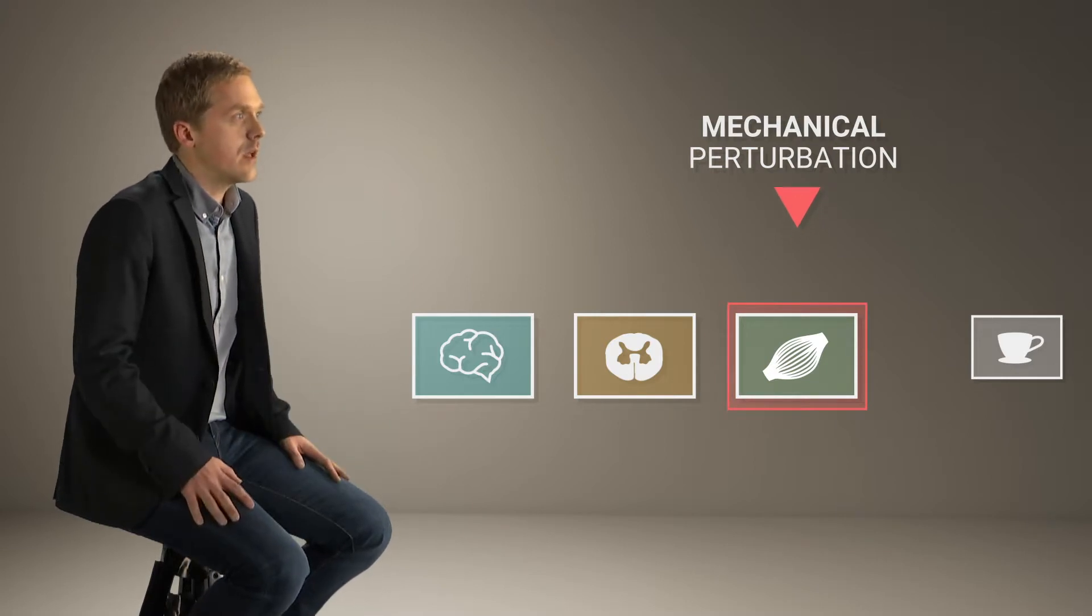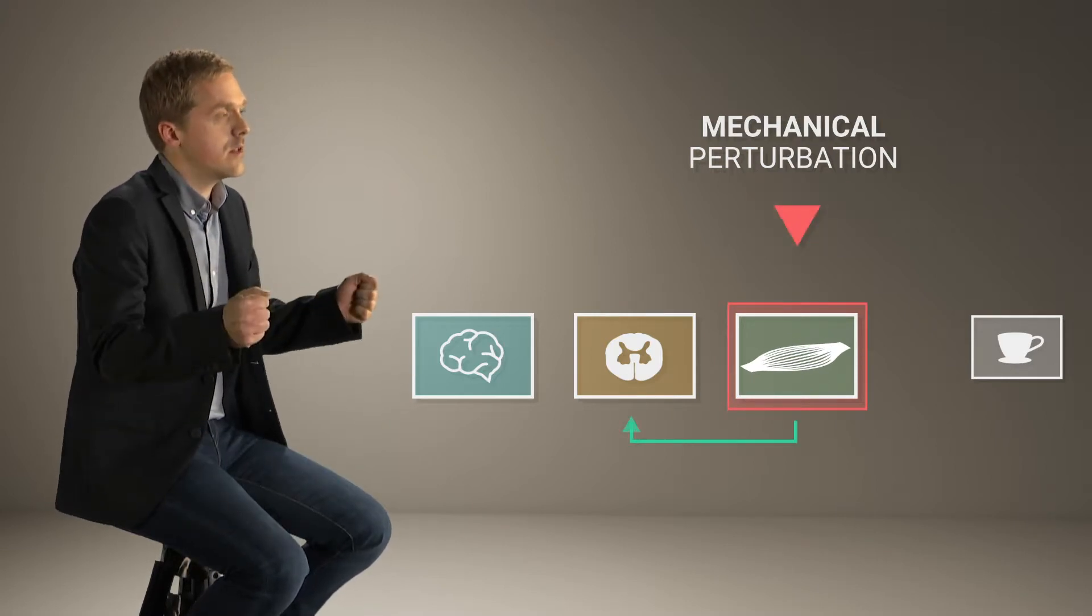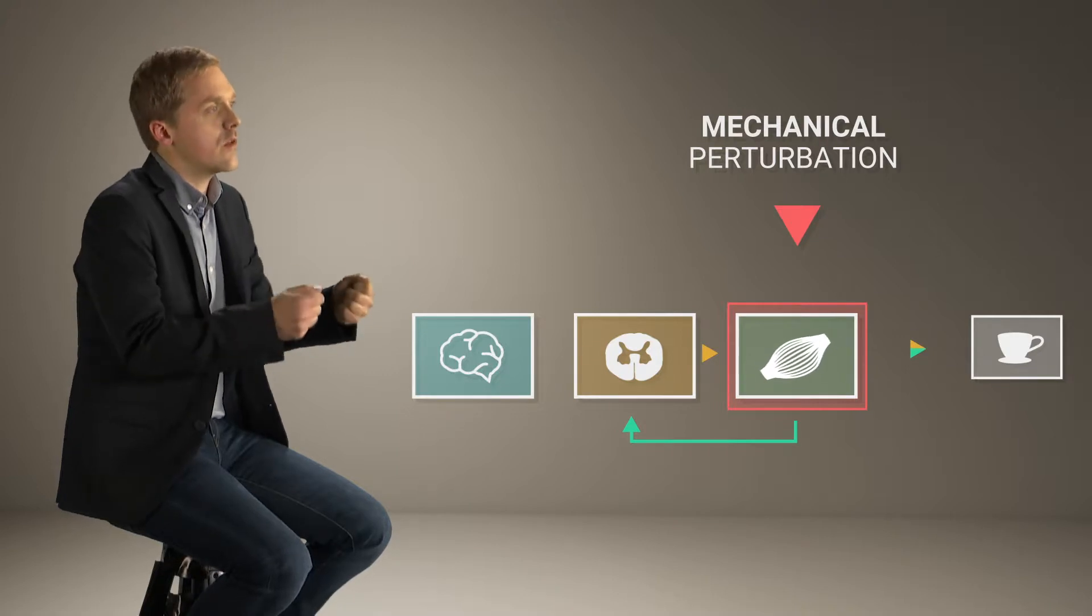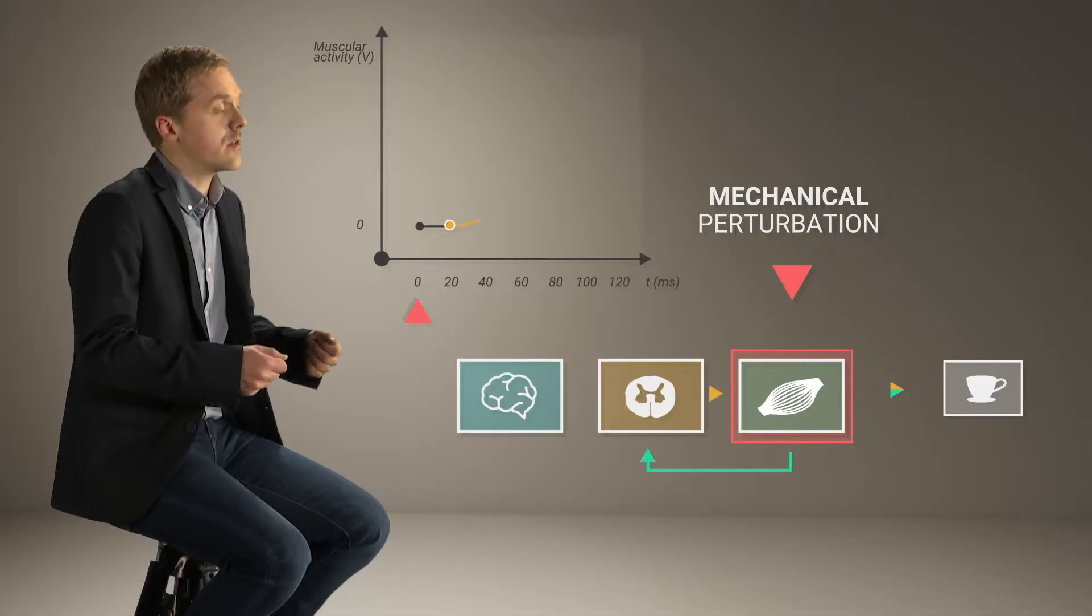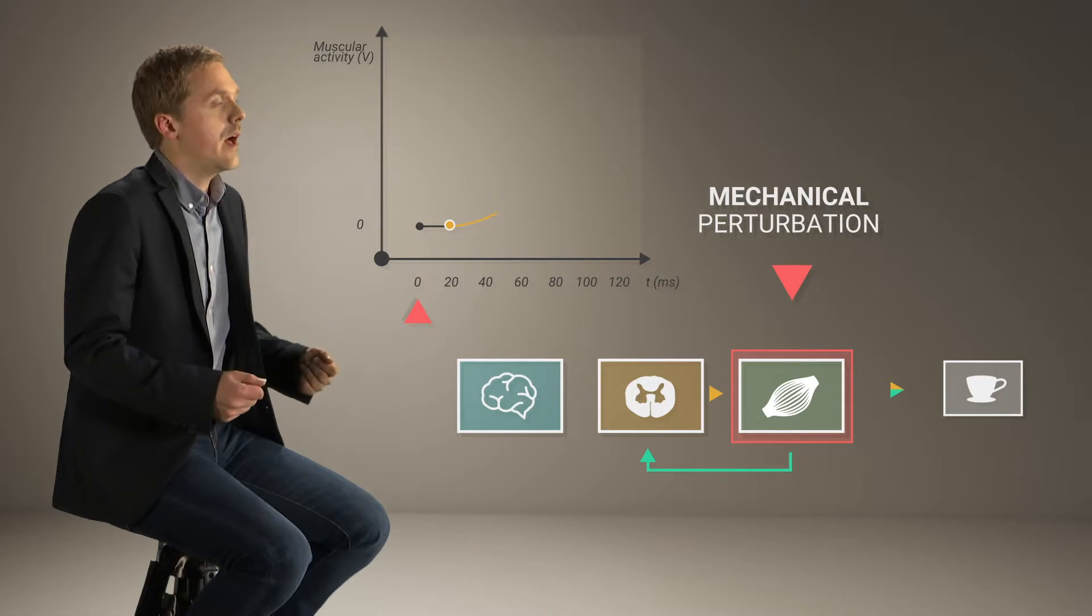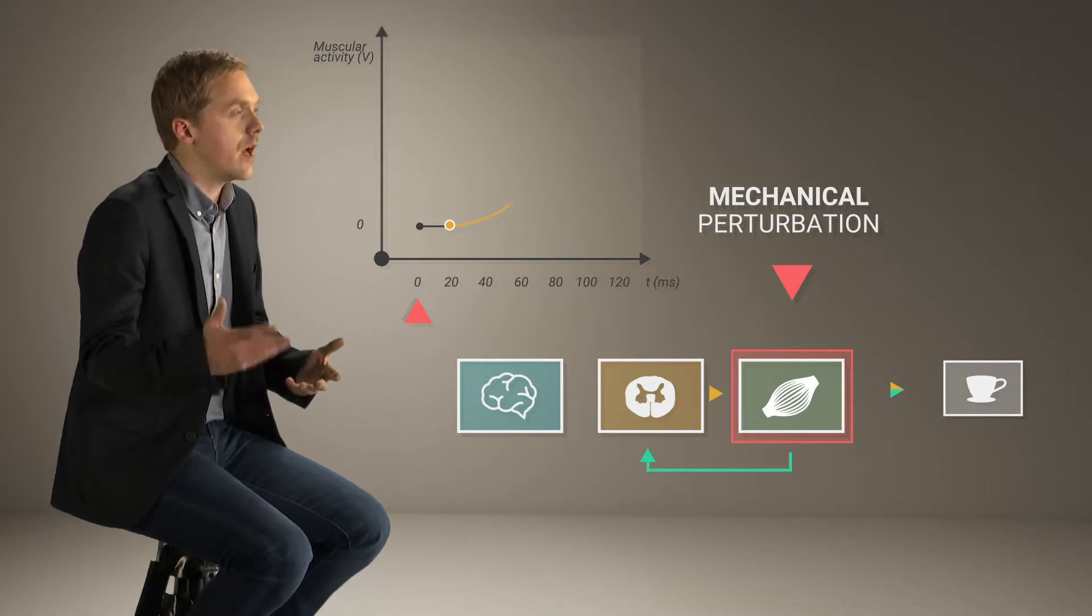Like a tendon tap to the knee, the muscle is stretched and a feedback response counters the stretch. This response is mediated by the spinal cord and takes about 20 milliseconds for upper limb muscles. It depends on the amplitude of the stretch as well as on the state of the spinal cord at the perturbation.